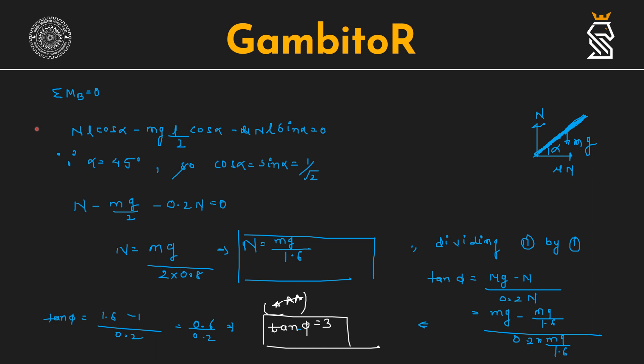Now for torque, torque about B, that is Mb equal to 0. I am showing you the diagram. I have taken the point about tension. So N times L cos alpha minus Mg times L by 2 cos alpha minus mu N times L sin alpha equals 0.